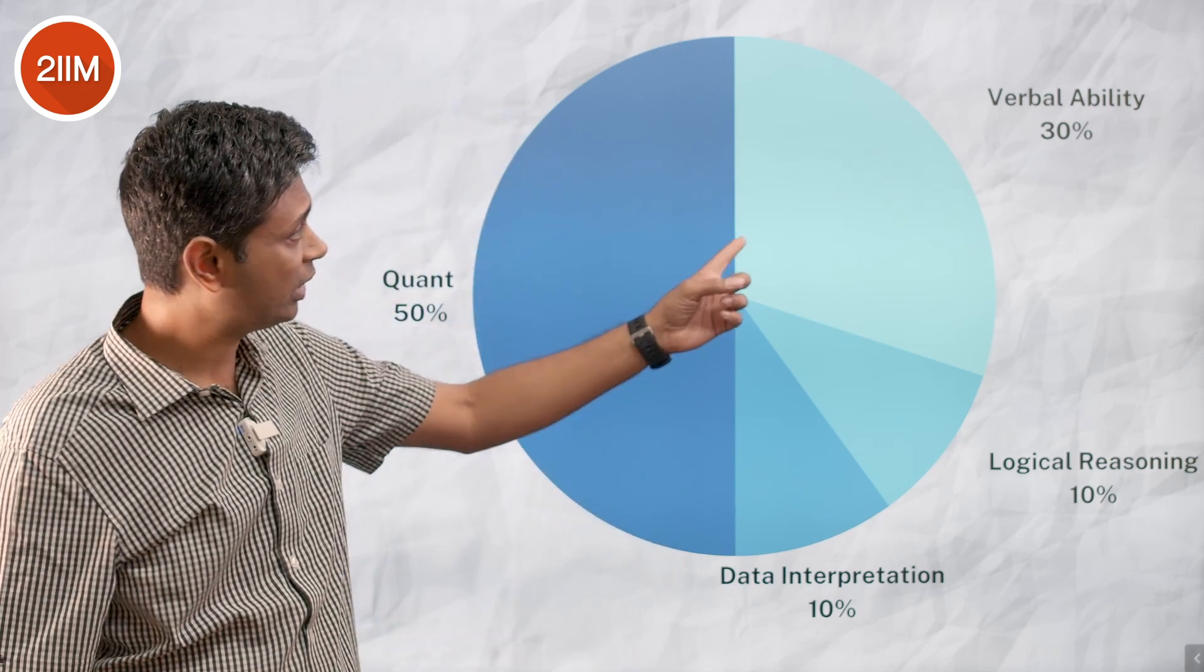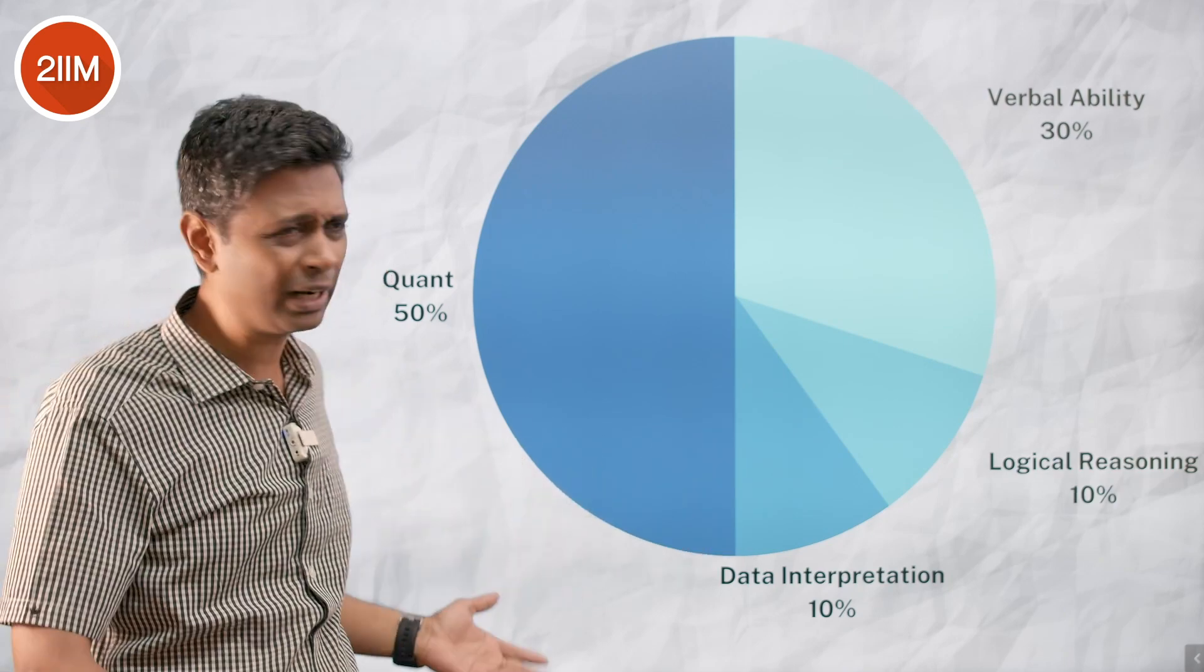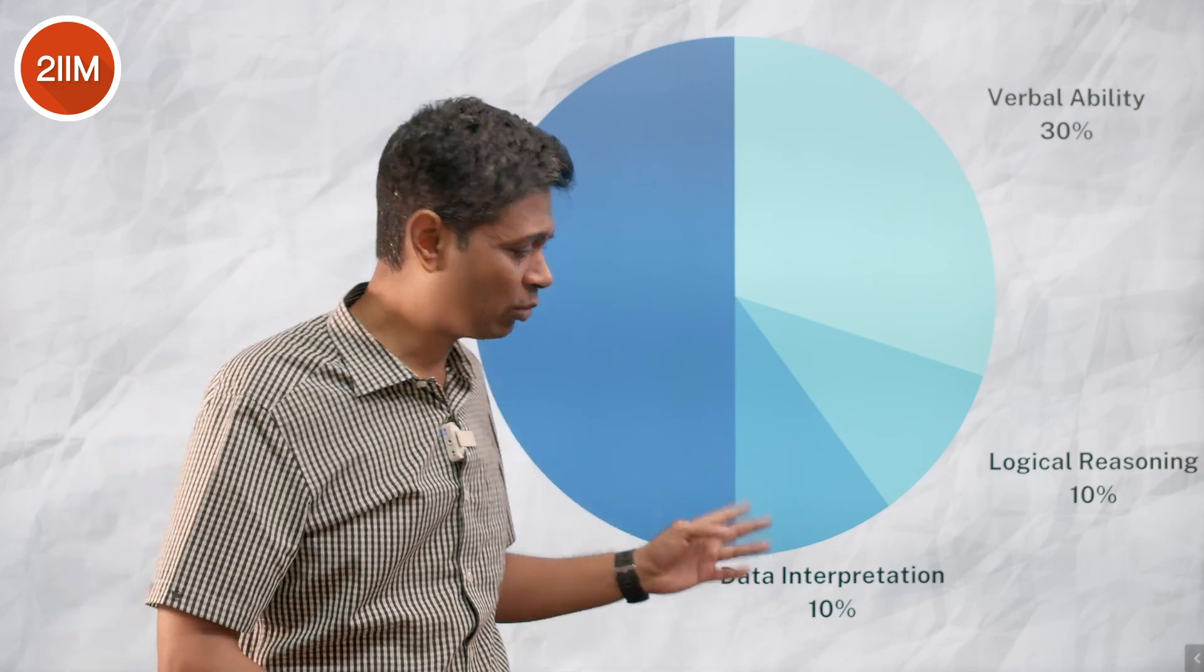There's a verbal ability section with 30%, logical reasoning, data interpretation, and quant. This is self-explanatory—I'm not going to go into detail explaining what each section is.